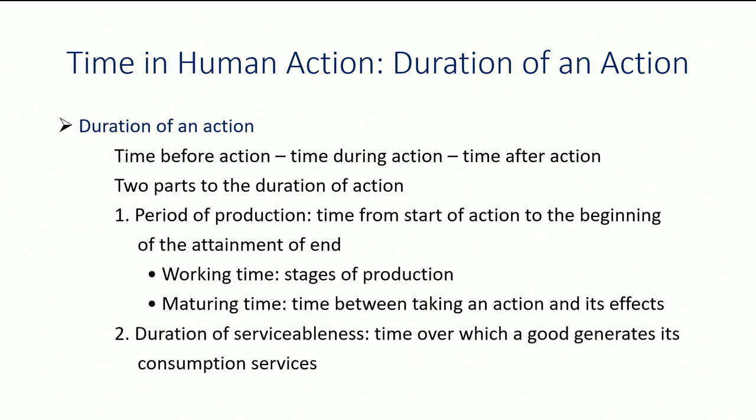We can break the duration of action into two parts. The period of production is the time from the start of action to the beginning of attainment of the end, and it has further subdivisions like working time. With an automobile: you extract rubber from rubber trees, go through the process of producing rubber and forming it into tires, ship them to the auto plant, and assemble the tires onto the other parts — that's the period of working time.